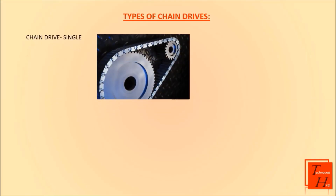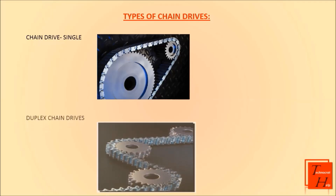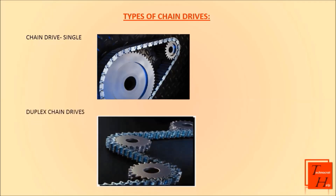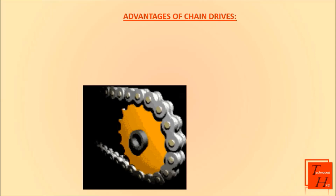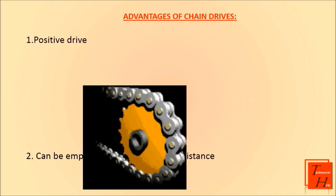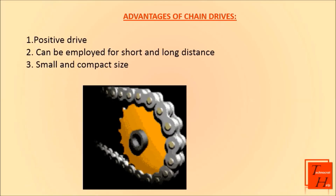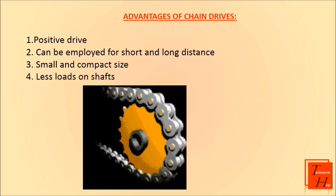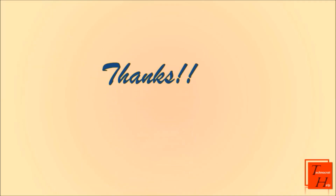On screen you can see the types of chain drives: one is single chain drive and the second is duplex chain drive. Advantages of chain drives: first, it is always a positive drive; second, it can be employed for both longer and shorter distances; third, it is very small and compact; fourth, it gives less load on shafts.